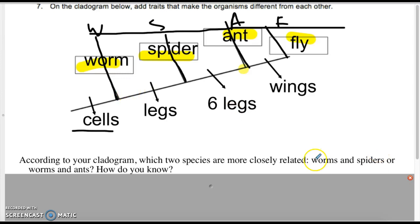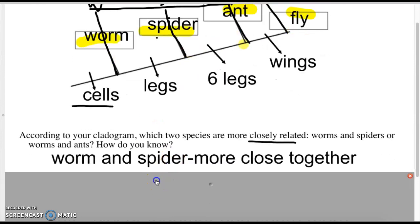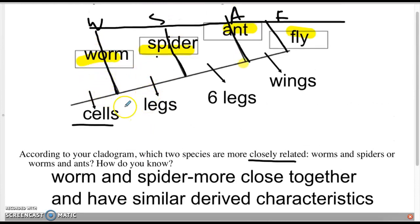You need to look at your cladogram. We have worms and spiders, their common ancestor, or which ones were closely related. Not common ancestor, but closely related. You need to look at on the cladogram which organisms are closer to each other on the cladogram. You would know that worms and spiders are more closer to each other than worms and ants. So the answer would have been worms and spiders, because they're more closer together and they have the similar derived characteristic in common.